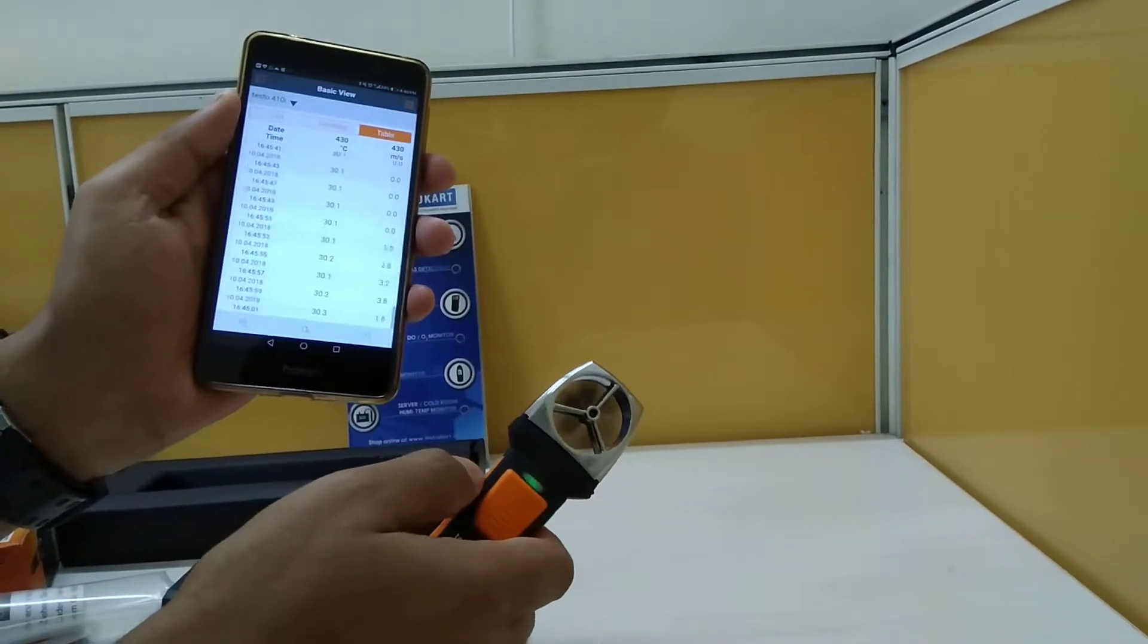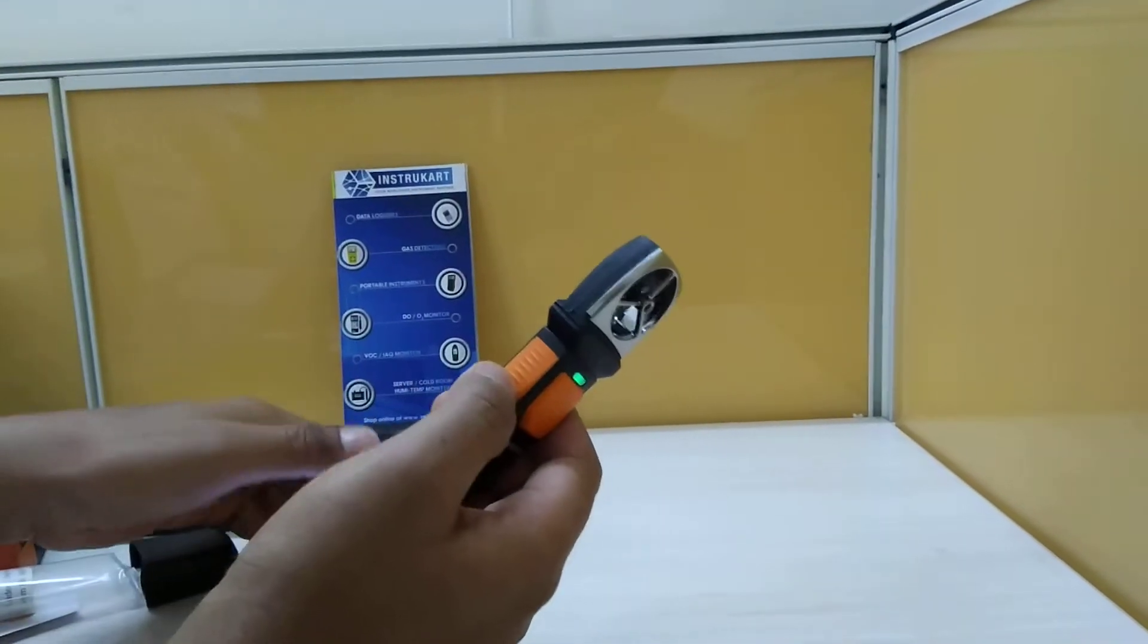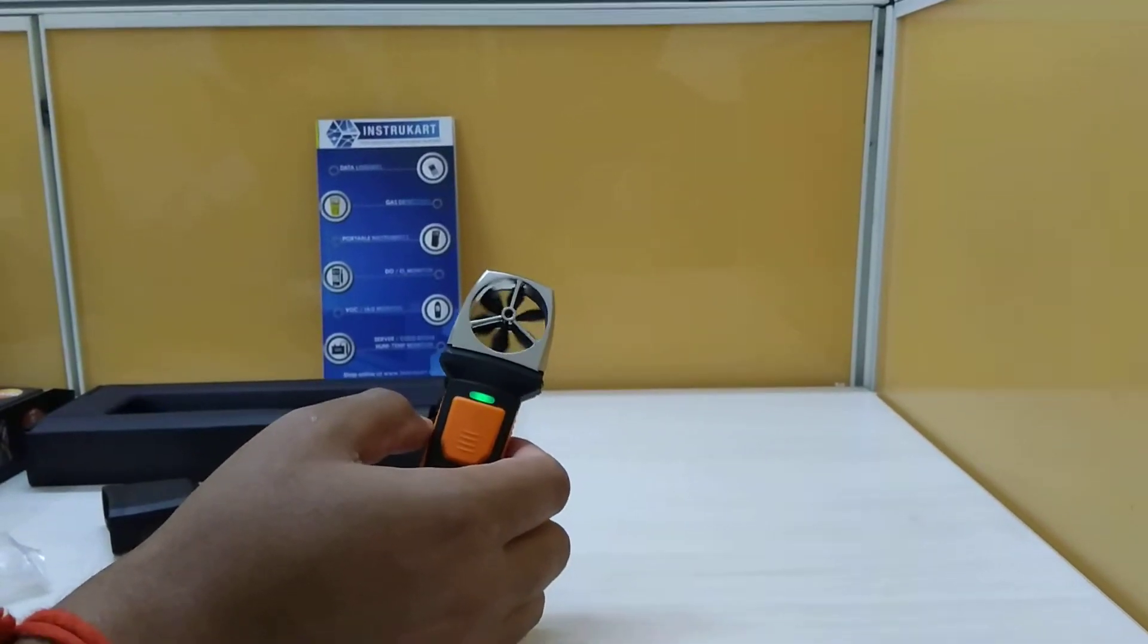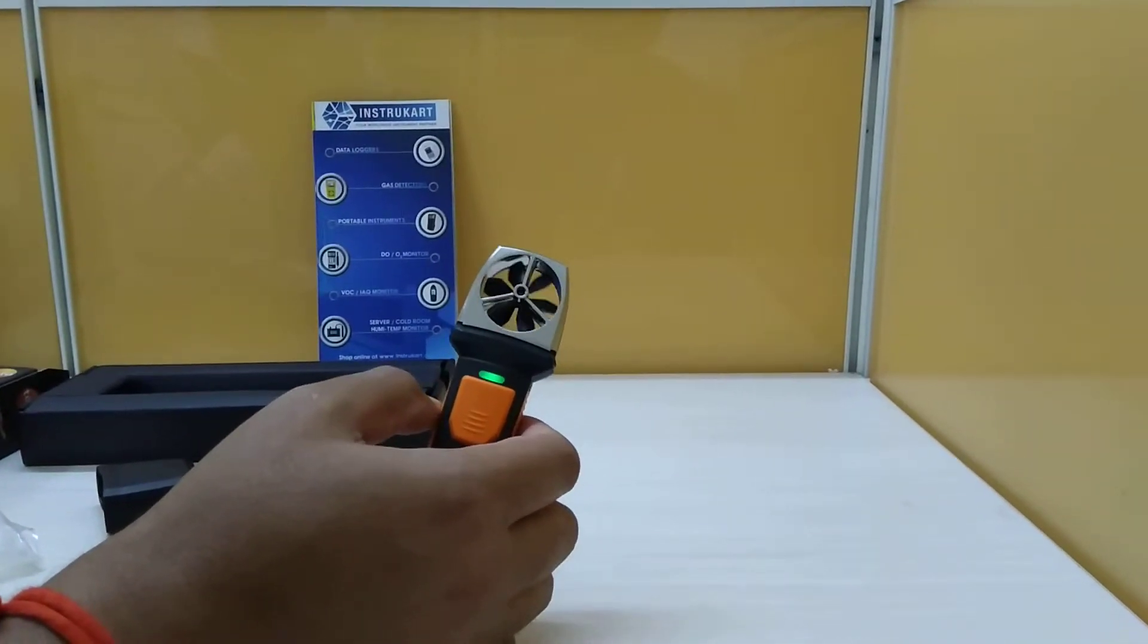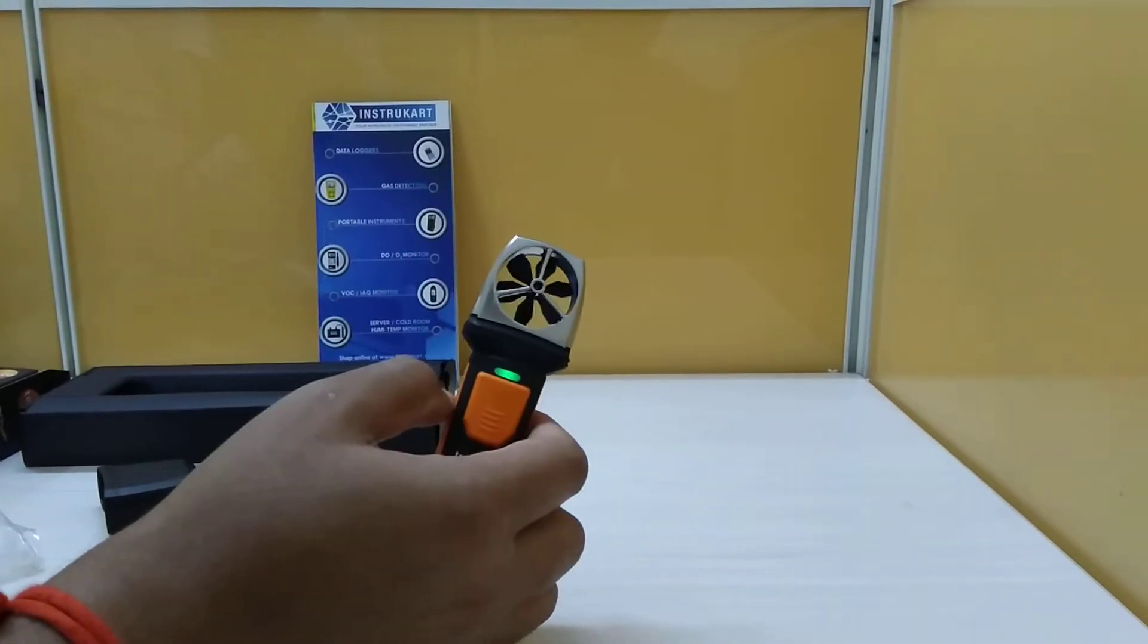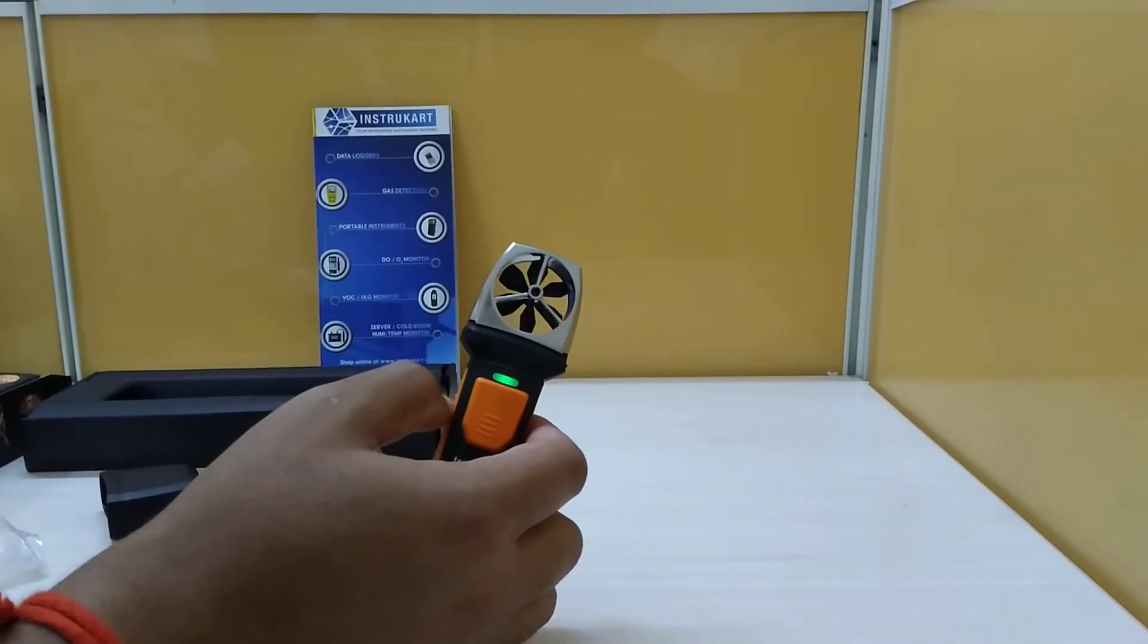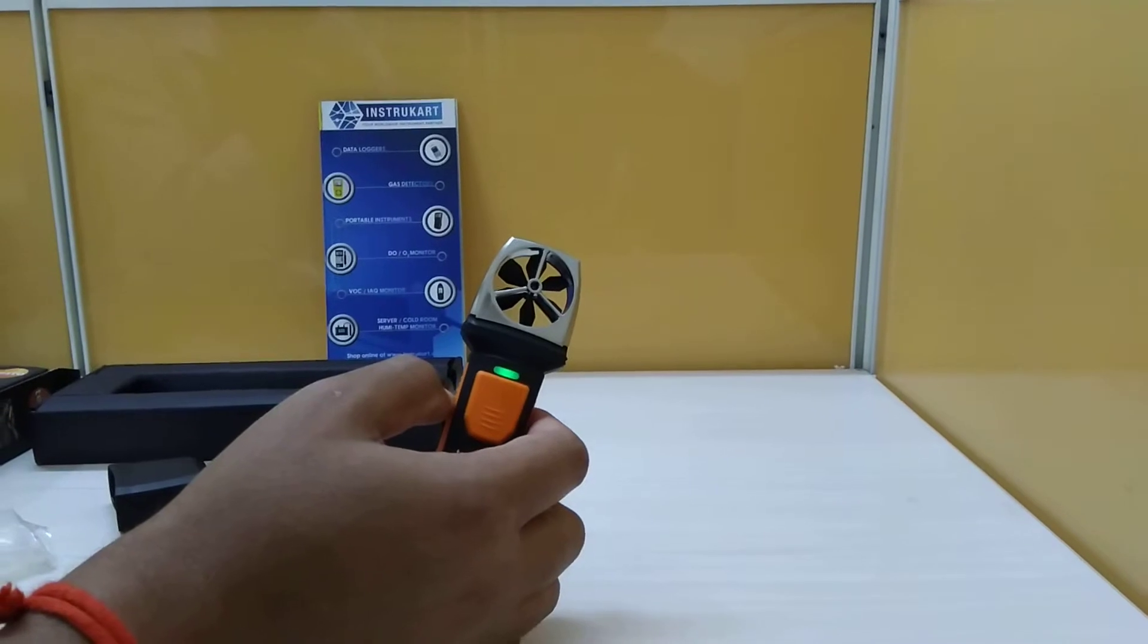Coming to the technicalities of this anemometer, we have a range of 0.4 to 30 meters per second, with an accuracy of plus or minus 0.2 meters per second and a resolution of 0.1 meters per second.